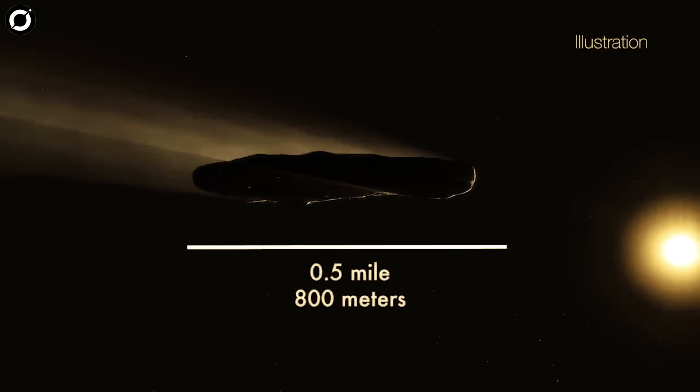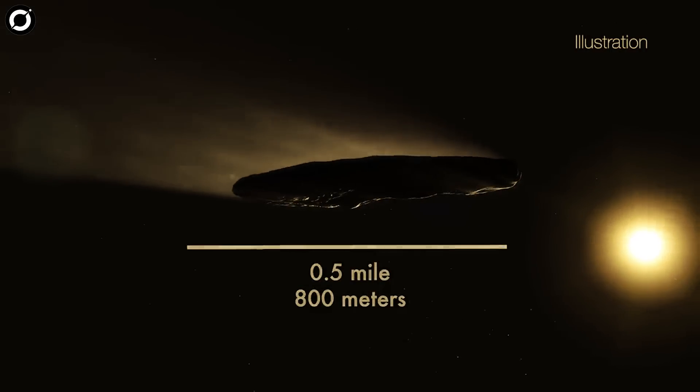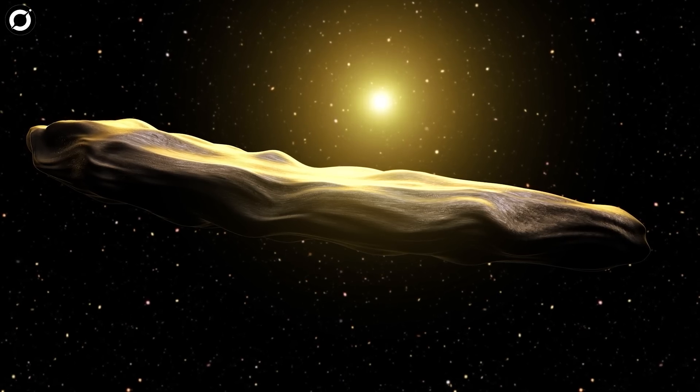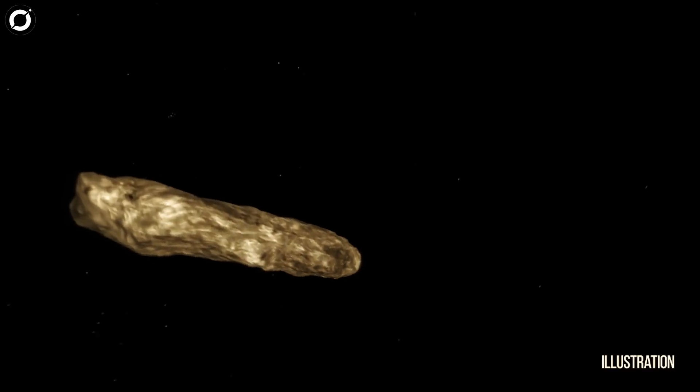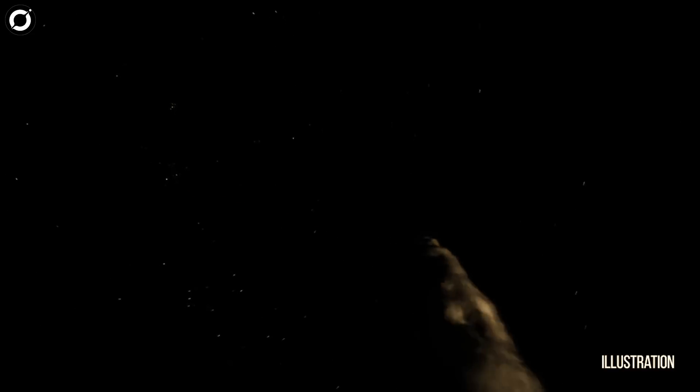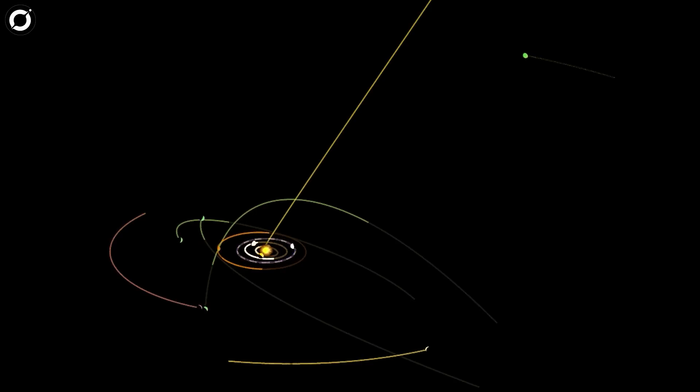It entered our solar system and after it flew past Earth, it suddenly accelerated on its way out of our star system. While tracking Oumuamua, we expected that it would follow a hyperbolic orbit, as though the only force acting on it would be gravitational. But it didn't. It was as though there was an additional acceleration, as though something unobserved were pushing it, in addition to the influence of gravity.